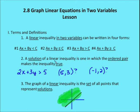Before, when we were dealing with number lines, we were dealing with just one dimension. Now we're dealing with two dimensions and a whole set of ordered pairs that make the inequality true. So let's take a look at a linear inequality in two variables.